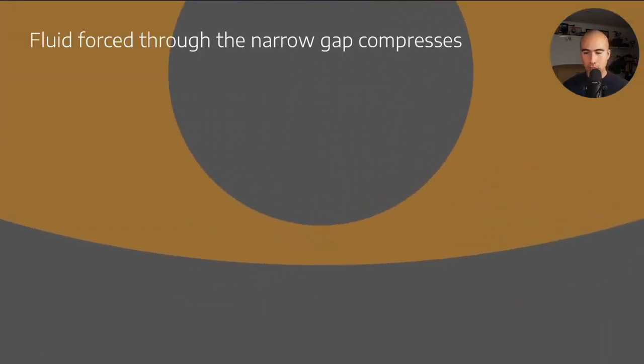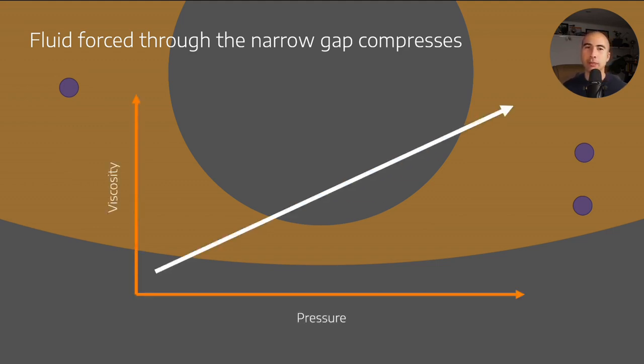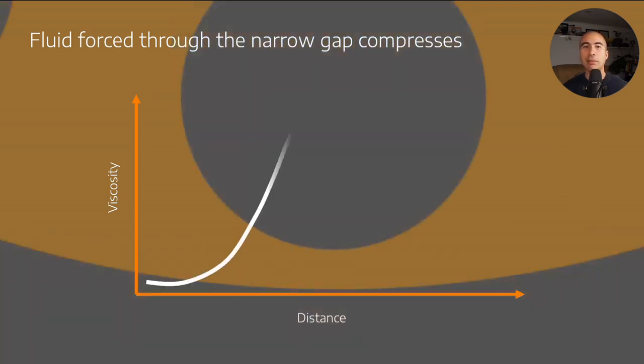The fluid is forced through this extremely narrow gap where it compresses, creating back pressure and a rapid increase in pressure. Viscosity increases with pressure, and across this gap we have a massive pressure increase. EHL theory tells us the viscosity is so high that the lubricant becomes glass-like, which is why it's able to support so much load.